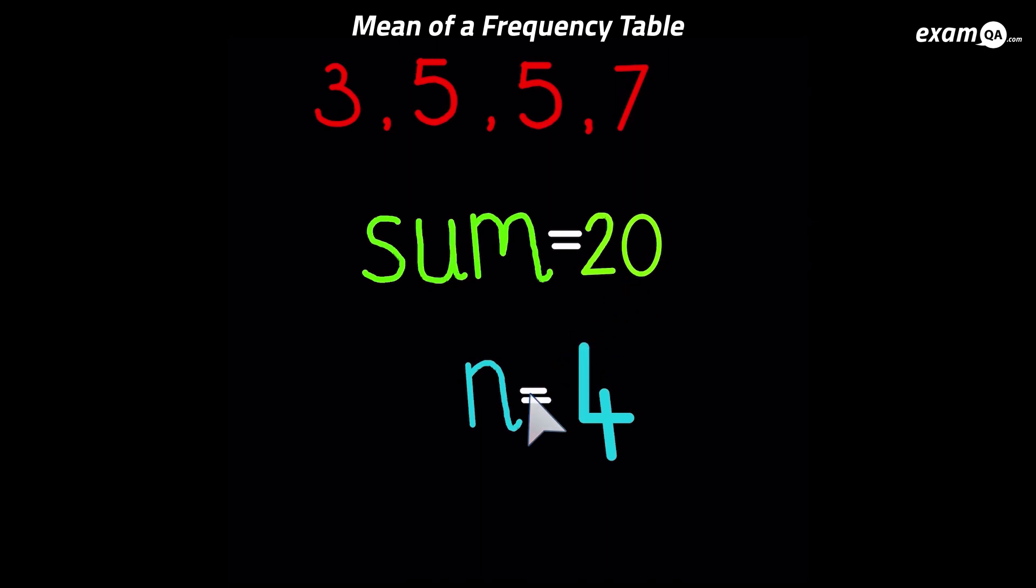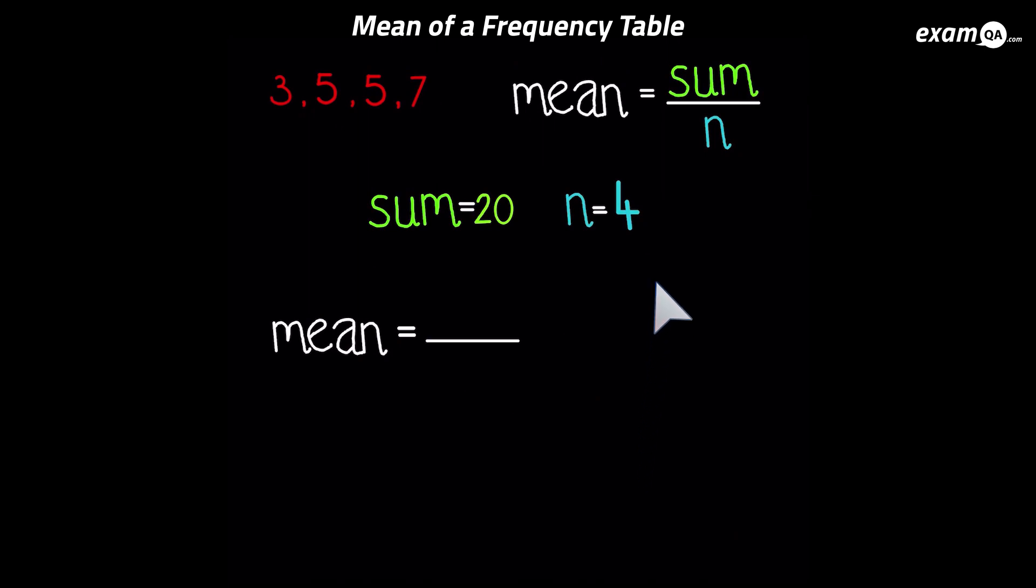And how many values have we got? Well, we've got four values here. Now we can go ahead and fill in the formula. So remember the formula was sum divided by n. So it's 20 divided by 4, which gives us 5. So it's very easy to work out the mean.